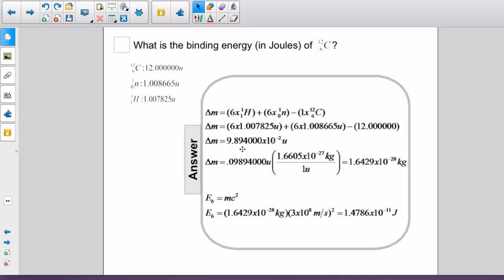That was 9.894 times 10 to the negative 2 atomic mass units. We want to convert that into kilograms, so we multiply by 1.6605 times 10 to the negative 27 kilograms per atomic mass unit to get a mass defect of 1.6429 times 10 to the negative 28 kilograms.